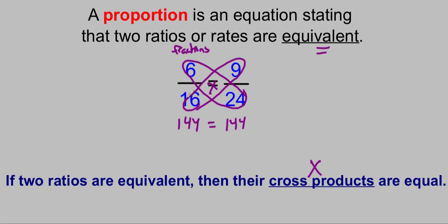Basically, all we did is multiply both sides by sixteen to get rid of the denominator. We multiply both sides by twenty-four. But the shortcut is really just multiplying along your diagonals. If both of those are equal to each other, then we know that they are proportional.